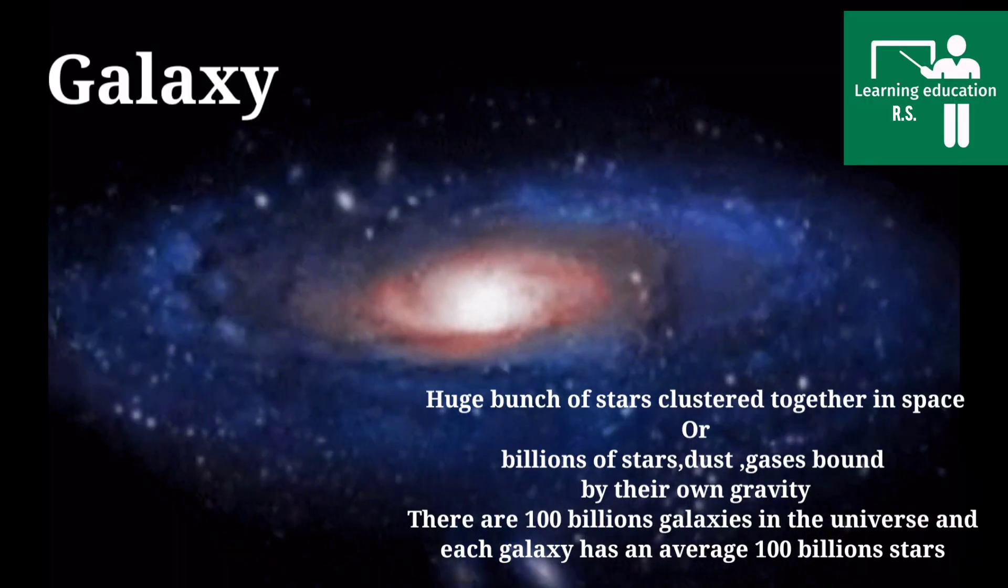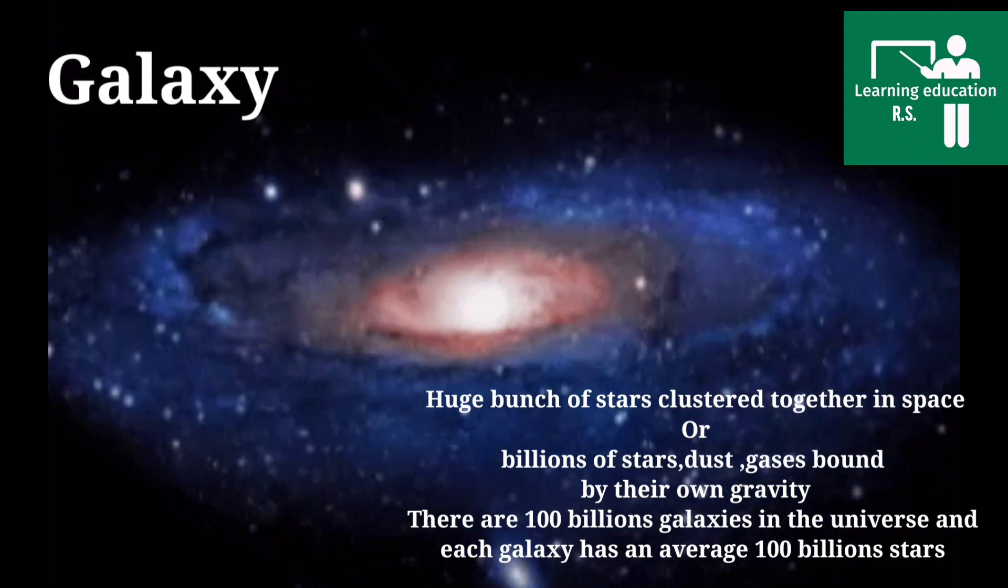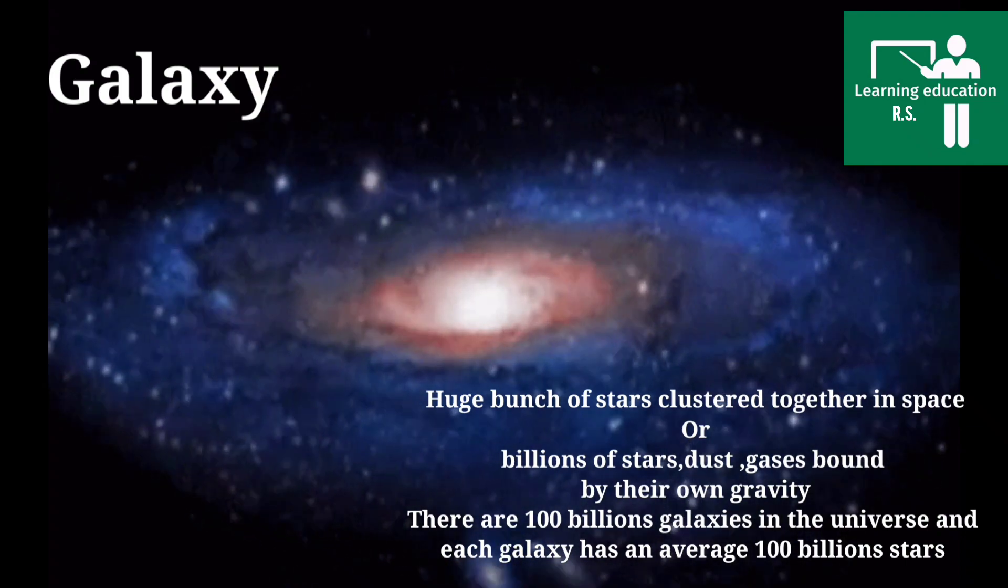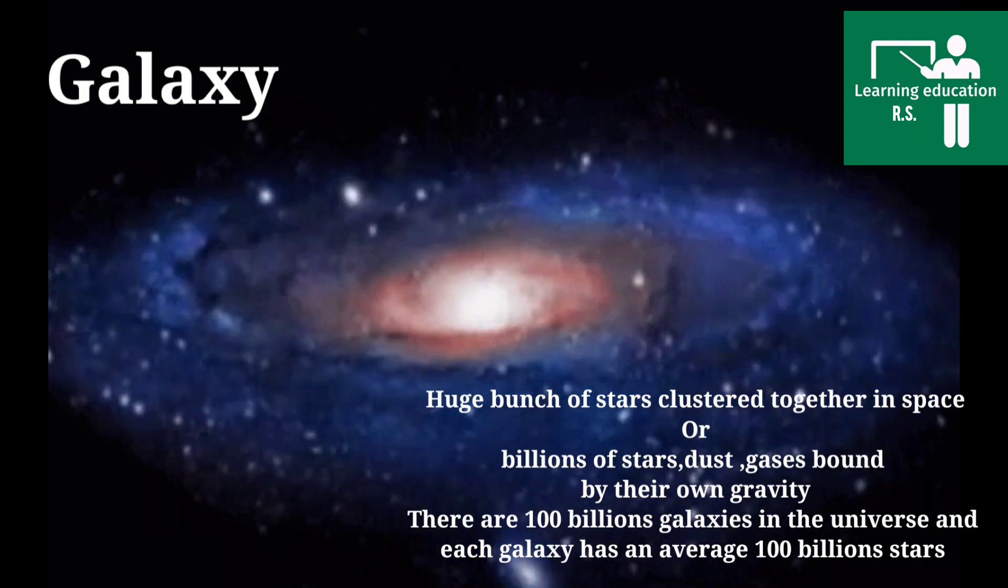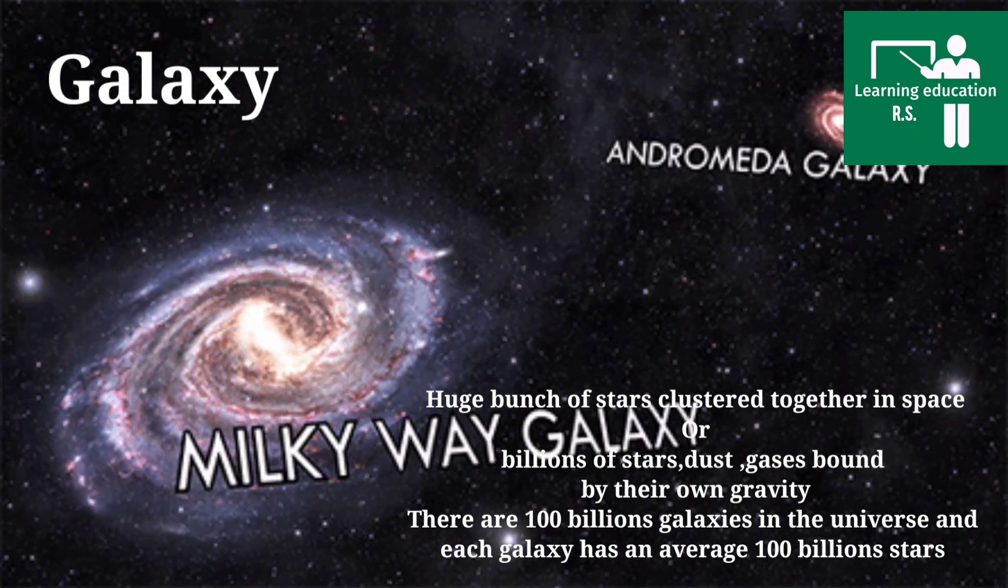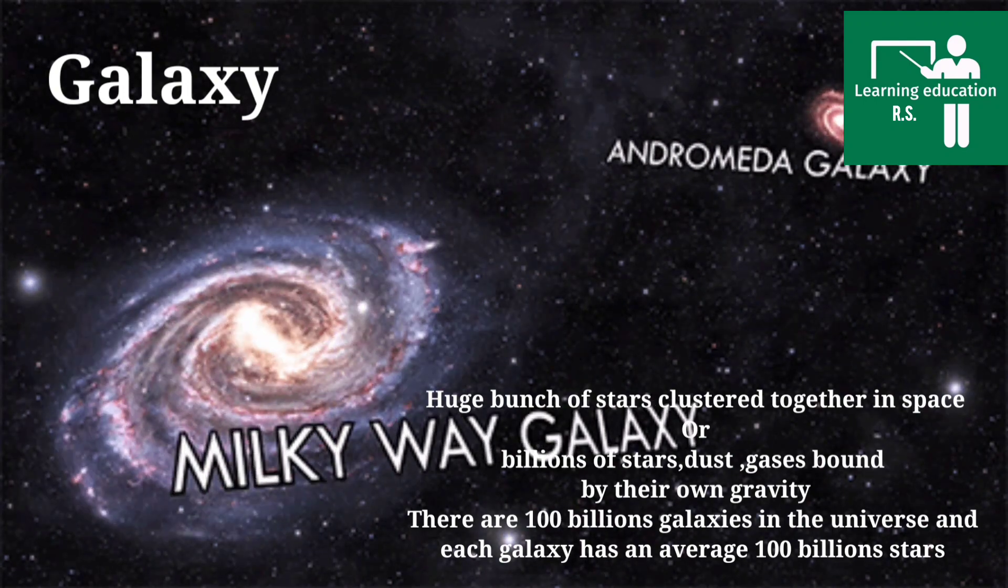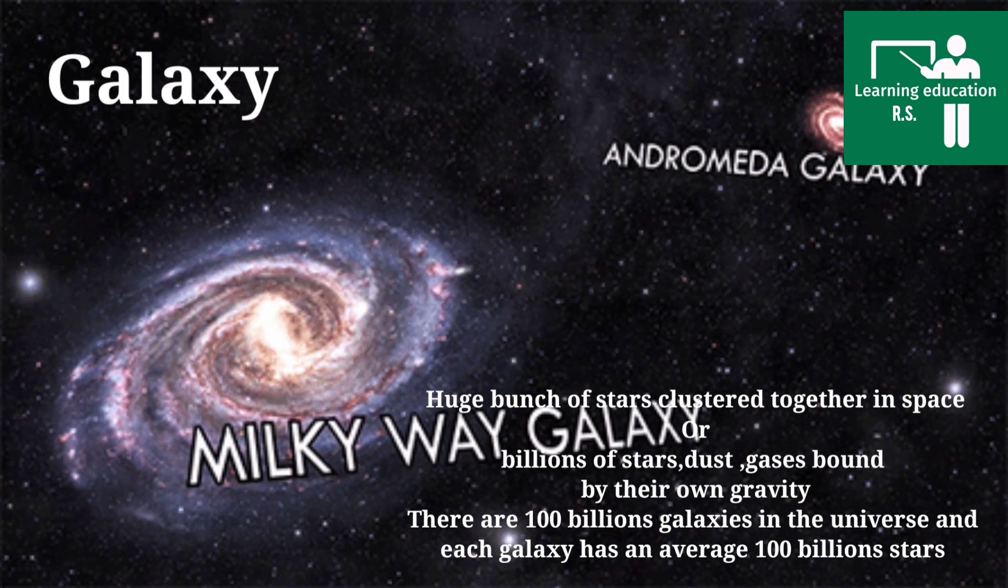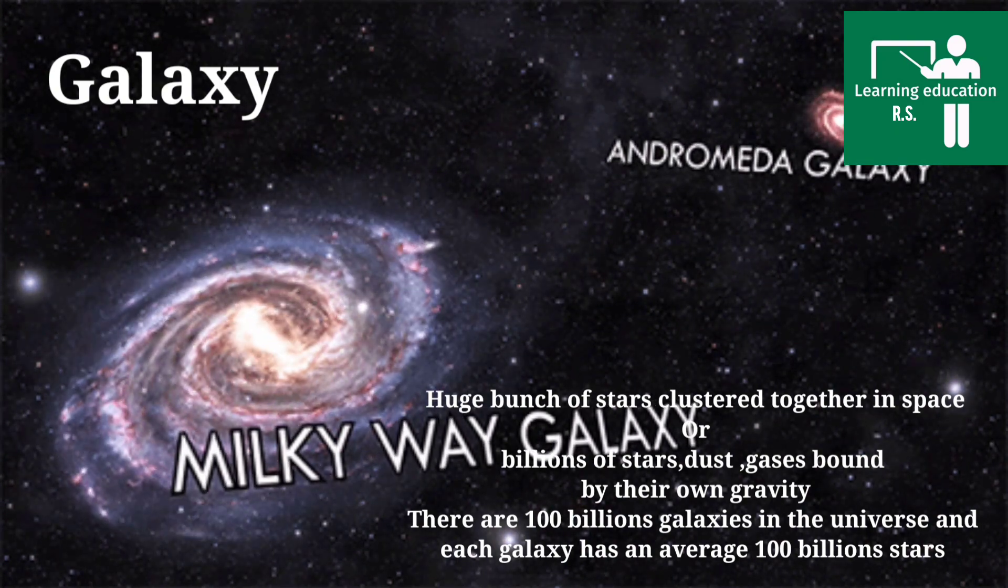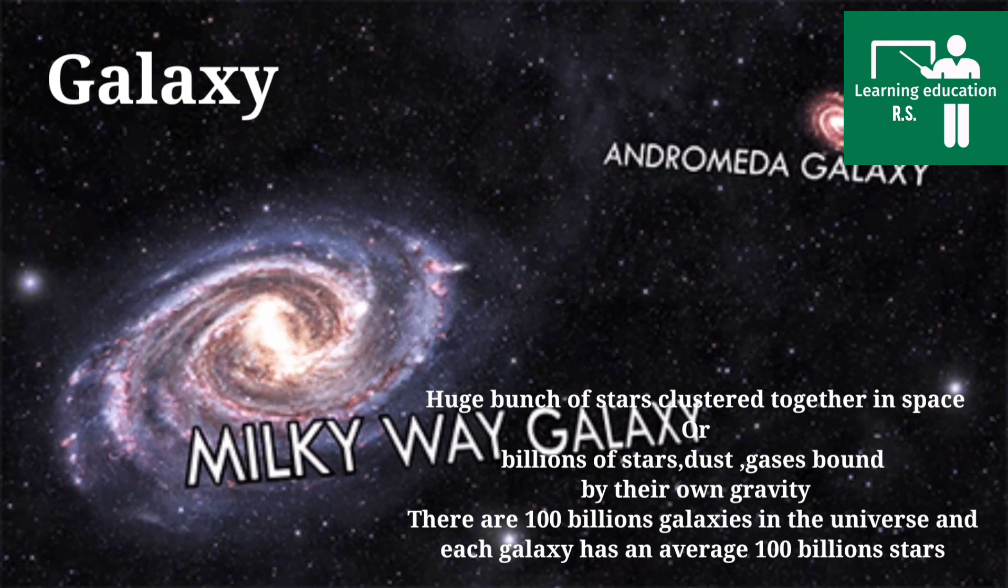Now what is a galaxy? A galaxy is a huge bunch of stars clustered together in space. Many stars are bound together in space, which contains stars, Earth, planets, and our solar system. Our Milky Way galaxy contains billions of stars. There are hundred billions of galaxies in our universe, and each galaxy contains many stars, dust particles, and gases that are bound together by their own gravity.